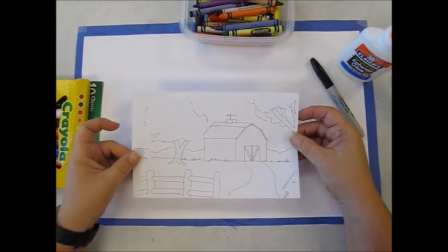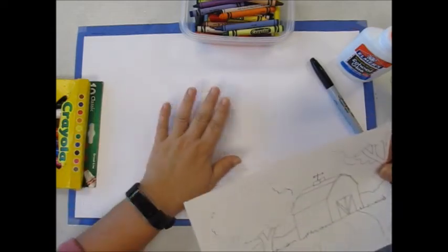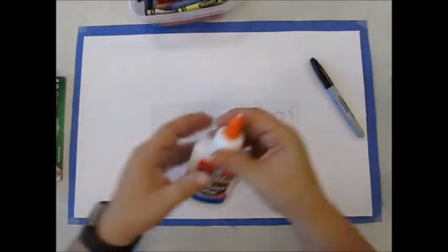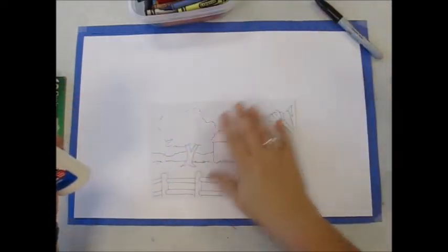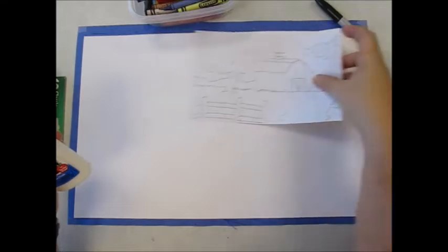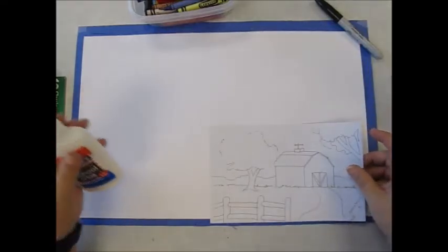This is the picture that's going to be within the picture. We're going to take our bottle of glue, and we're going to glue this picture somewhere on the larger piece of white paper.